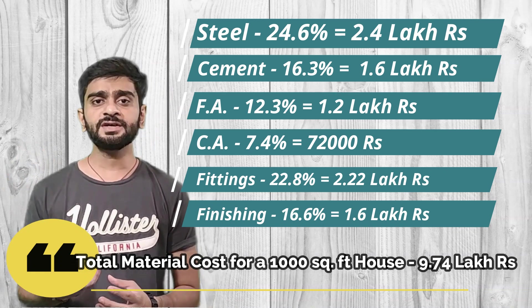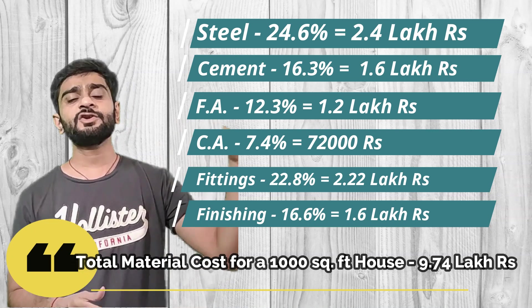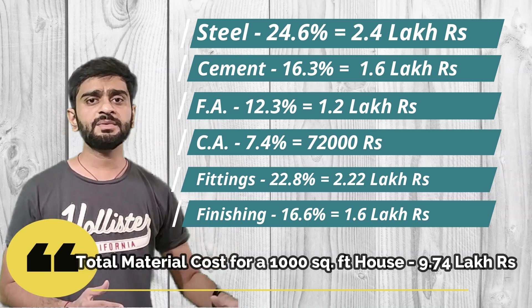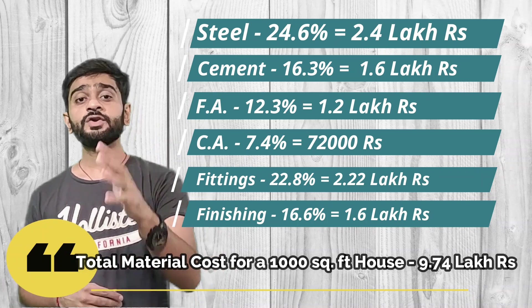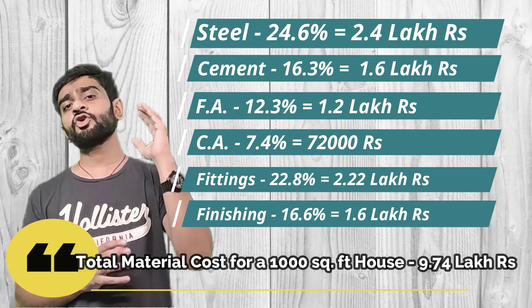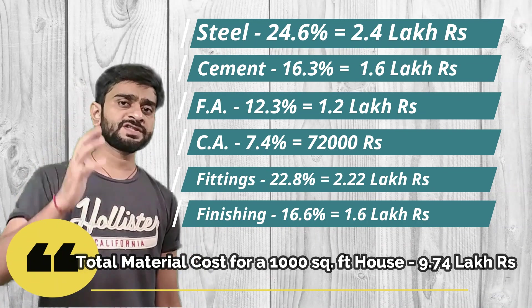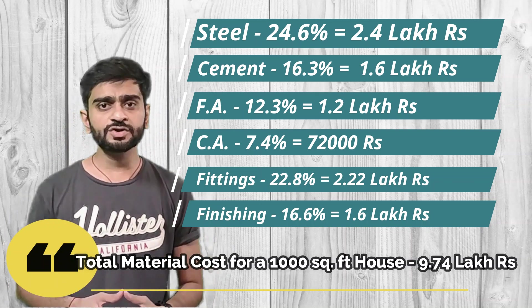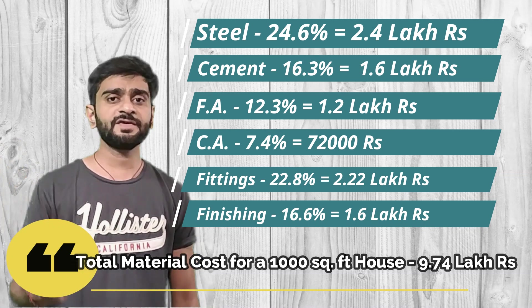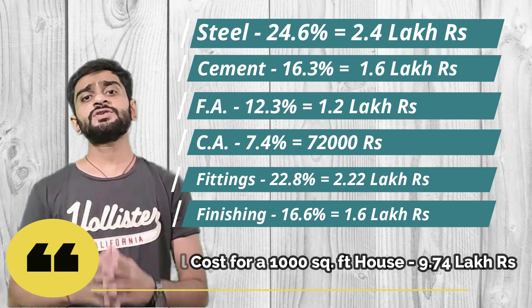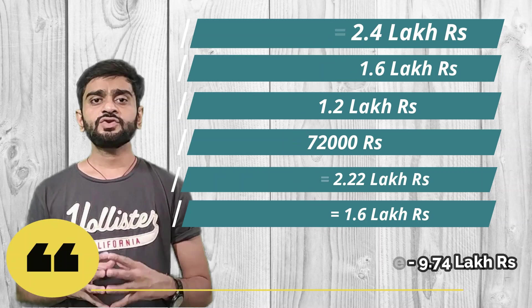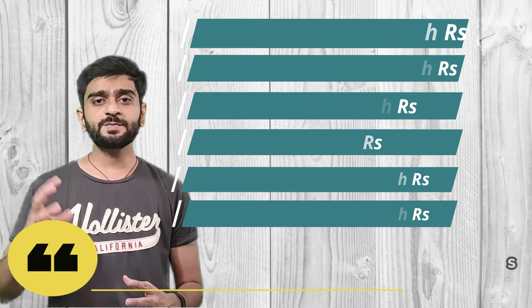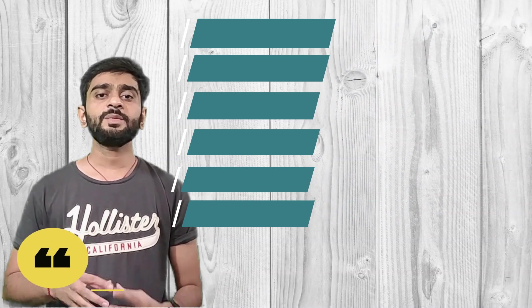For fittings, the overall cost is 22.8% of the material cost, which comes to 2.22 lakh. Out of these fittings, plumbing occupies 5.5%, electrical work occupies 6.5%, doors and windows fittings occupy 6.5%, and sanitary fittings occupy 4.5%. Finally, finishing work including paint, tiles fitting, and plaster accounts for 16.6% of the overall material cost, which is 1.6 lakh rupees. Our total thus comes to 9.74 lakh.